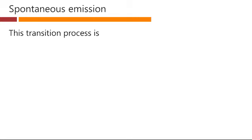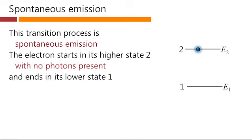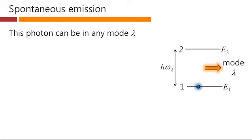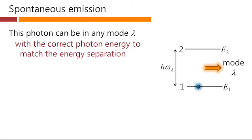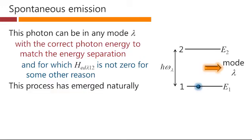This transition process is spontaneous emission. The electron starts in its higher state, 2, with no photons present, and it ends in its lower state, 1, with one photon present. This photon can be in any mode lambda with the correct photon energy to match the energy separation and for which this number is not zero for some other reason. It could be zero because this integral might evaluate to zero for specific functions and specific polarizations or directions of photons.